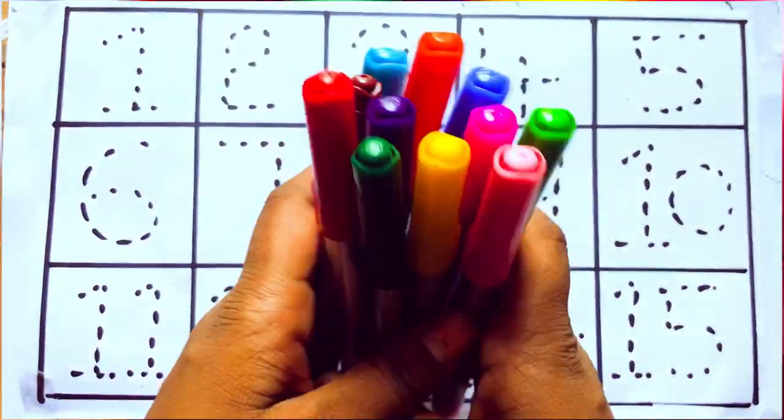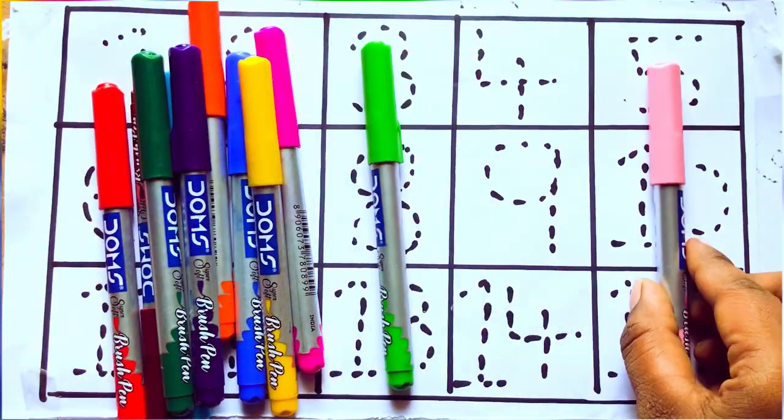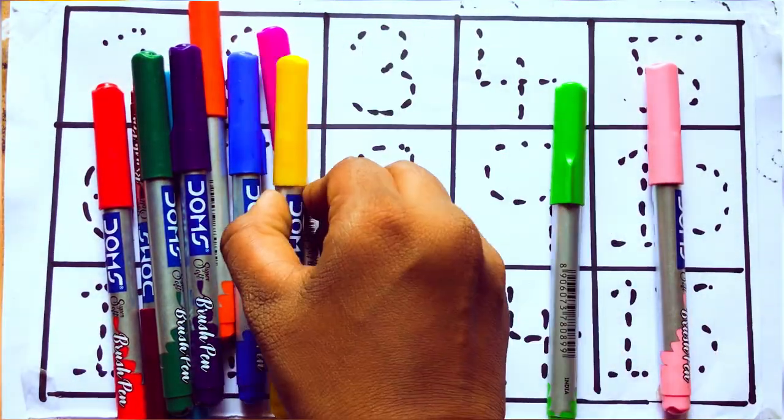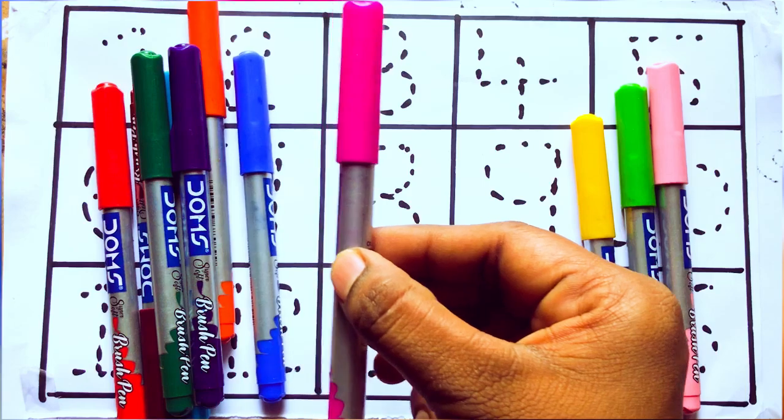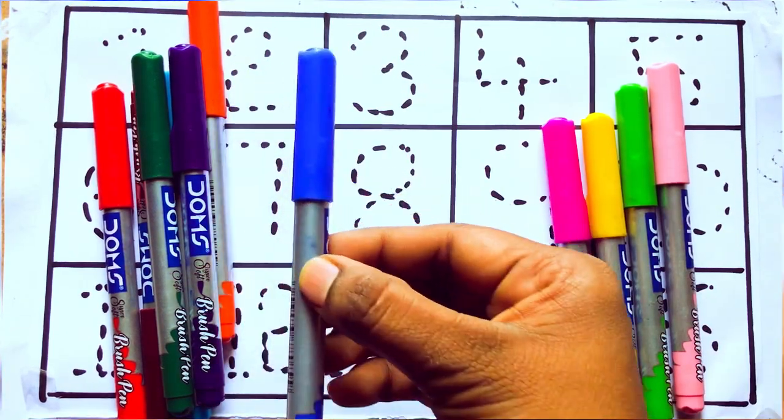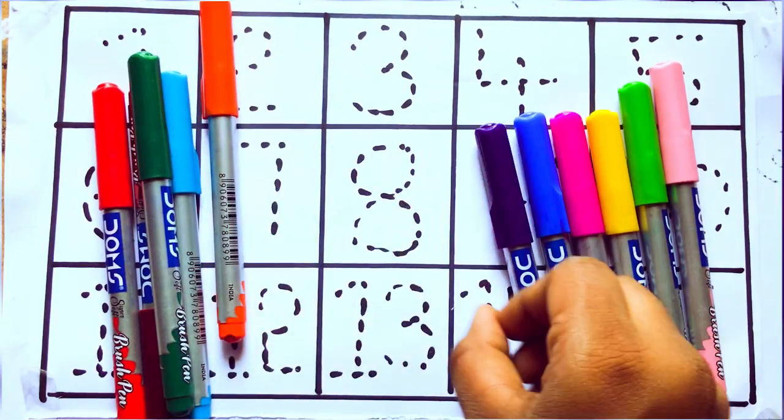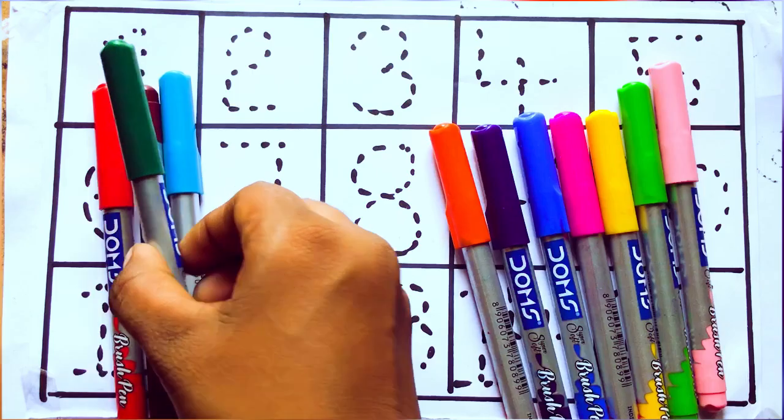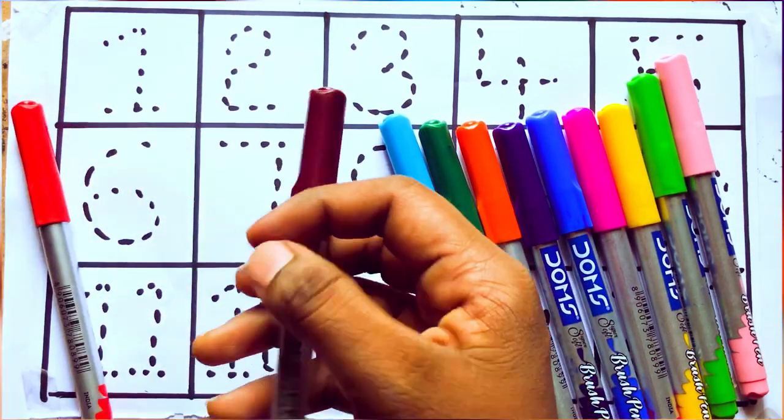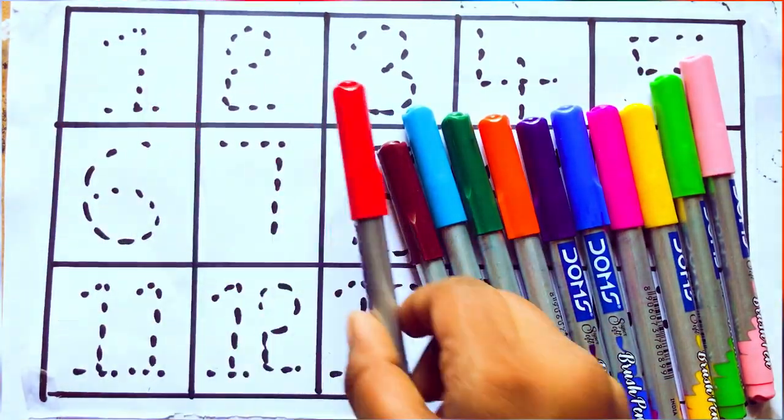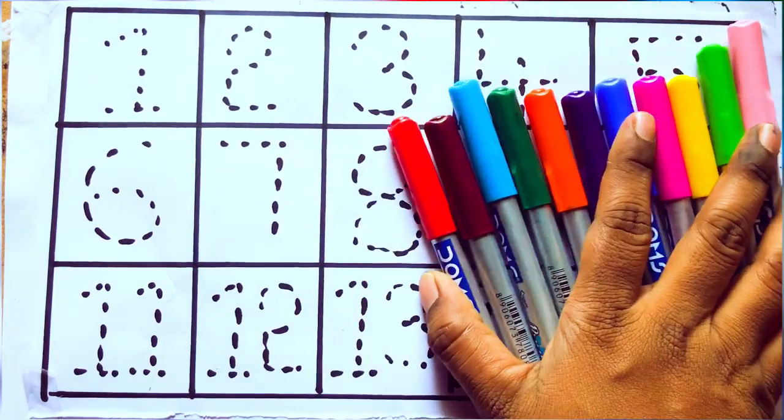Let's learn the names: pink color, green color, yellow color, pink color, blue color, violet color, orange color, green color, sky blue color, brown color, red color. Let's draw numbers.